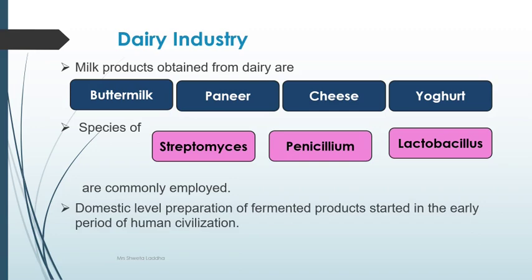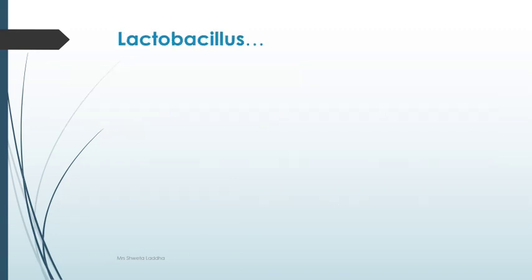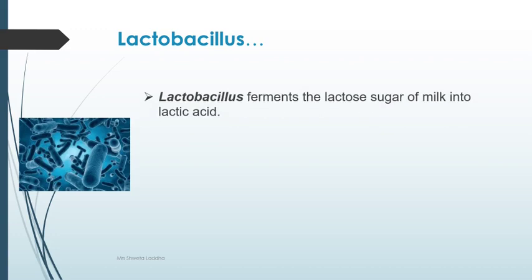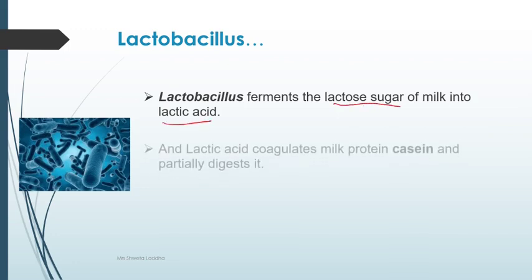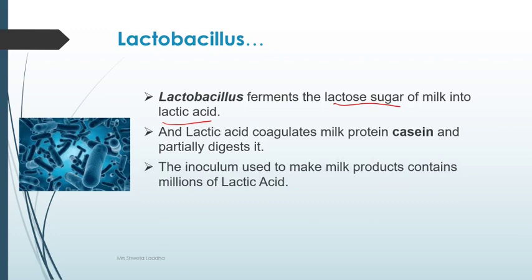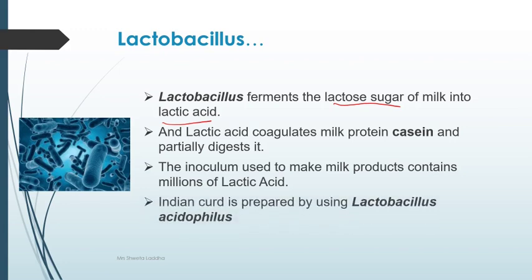Domestic-level preparation of fermented products started early in the period of human civilization. Lactobacillus are rod-shaped bacteria that ferment the lactose sugar of milk and convert it into lactic acid. This lactic acid coagulates the milk protein casein. The inoculum used to make products contains millions of lactic acid bacteria — we call it tak or chas.